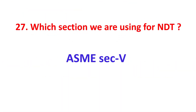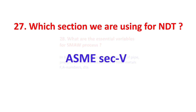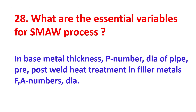Which section are we using for NDT? ASME Section 5. What are the essential variables for the SMAW process? Base metal thickness, P number, and diameter.